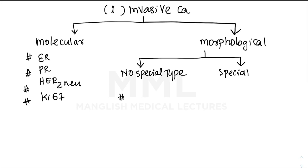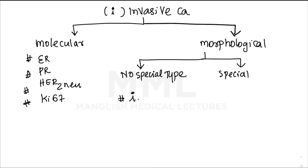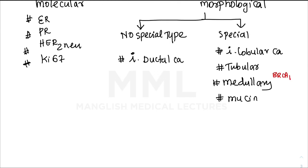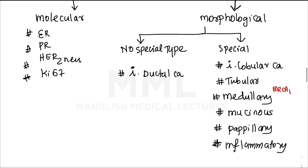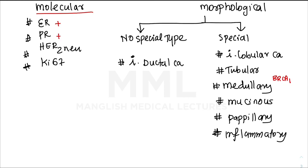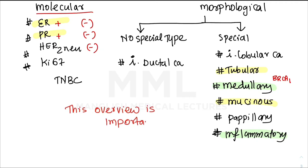For morphological classification, invasive carcinomas are divided into no-special-type (invasive ductal carcinoma) and special types, which include invasive lobular carcinoma, tubular, medullary, and mucinous carcinoma. Molecularly, ER-positive, PR-positive cancers may appear as tubular or mucinous morphology, while TNBC may appear as inflammatory or medullary carcinoma. Good prognosis is generally seen with ER-positive luminal A variants, and worst prognosis with basal-like or TNBC.